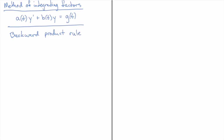Let's write down an equation that's already cooked up in the right form — this won't always be the case, but I'll give a simple example where we don't have to do half of the work we'll normally have to do. So I have t² y' + 2ty = sin(t).